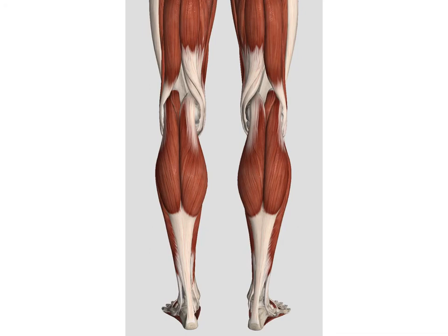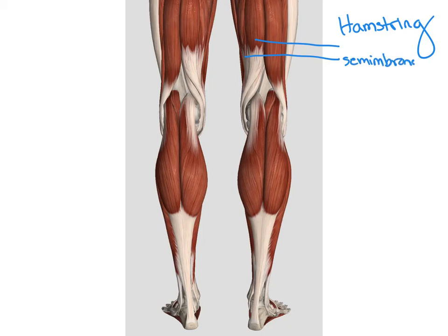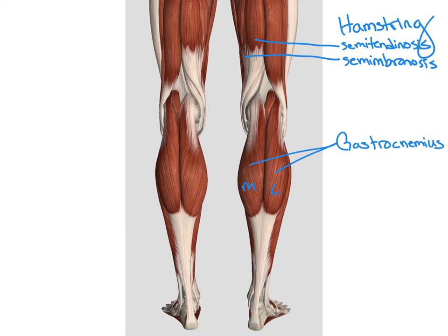On the posterior side, we have our hamstring group again, like we saw with the hip. We have our two semi-muscles on the medial side — semimembranosis and semitendinosis. Semimembranosis is medial to the semitendinosis. Inferior to the knee, we have the two heads of our gastrocnemius, divided into a medial head and a lateral head. Deep to our gastrocnemius, we have our plantaris.